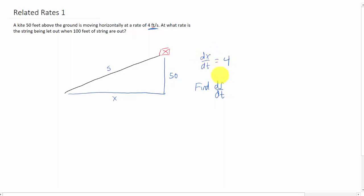So now we've set up the related rates problem. We found the rate that we're given and we know the rate that we need to find. So what we need to do is we need to relate those two variables, X and S. Fortunately, you'll notice that this is a right triangle and we can use the Pythagorean theorem.